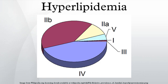Hyperlipidemia, or hyperlipoproteinemia, involves abnormally elevated levels of any or all lipids and lipoproteins in the blood. It is the most common form of dyslipidemia. Lipids are transported in a protein capsule. The size of that capsule, or lipoprotein, determines its density. The lipoprotein density and type of apolipoproteins it contains determines the fate of the particle and its influence on metabolism.